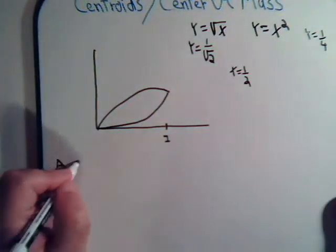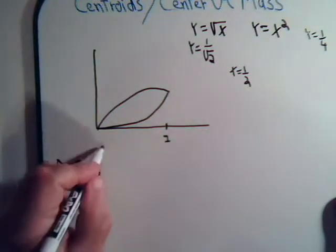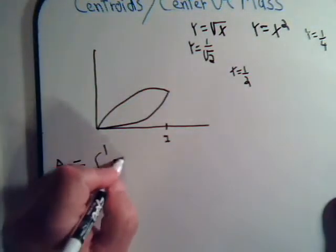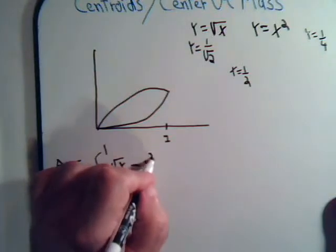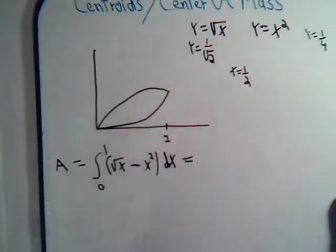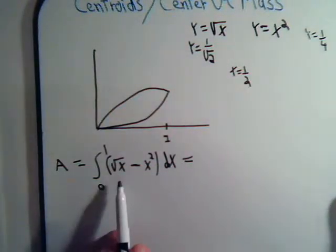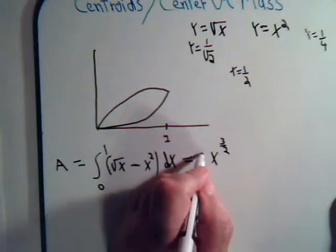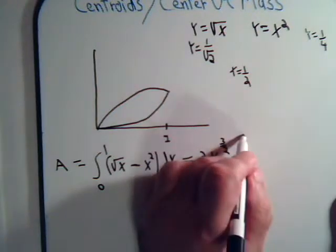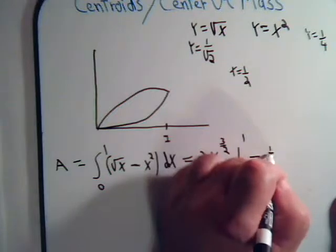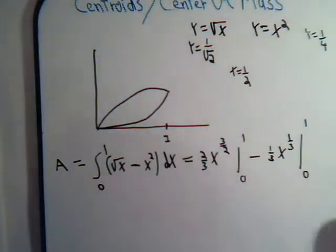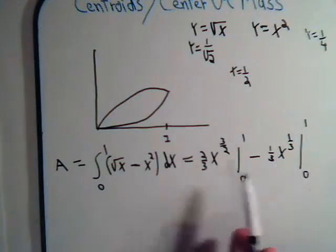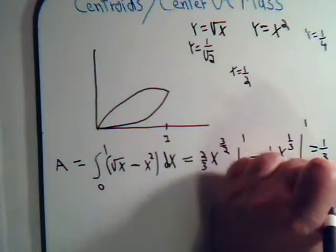First, let's find the area. The area equals the integral from zero to one of the square root of x minus x squared dx. Integrating: x to the one-half becomes x to the three-halves divided by three-halves, and x squared becomes one-third x cubed, both evaluated from zero to one. Putting in one: we get two-thirds minus one-third, so the area equals one-third.